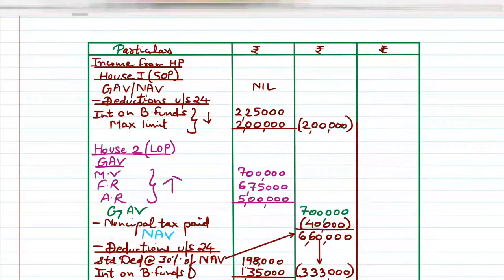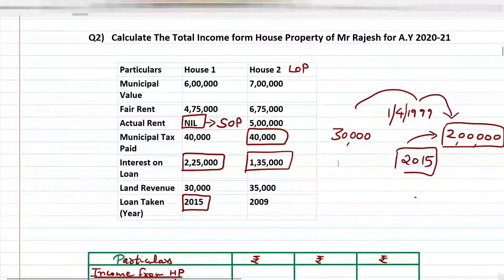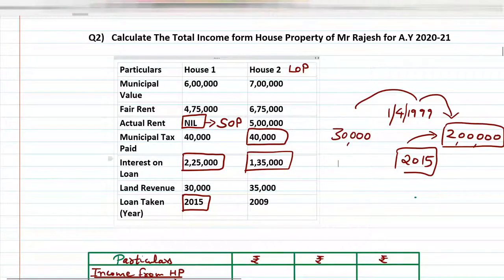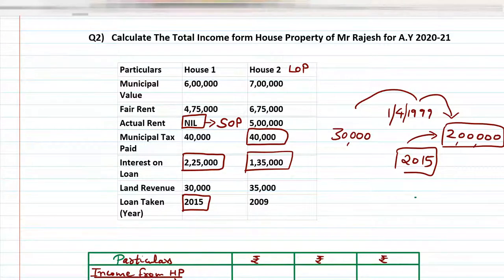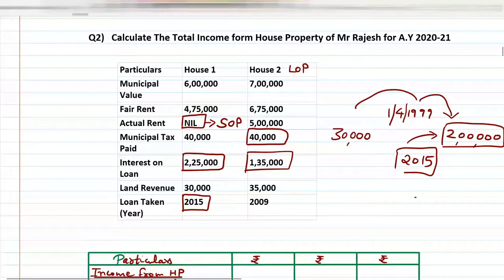In a Self Occupied Property, only one deduction can be claimed — Interest on Borrowed Funds. In the question, interest on loan is ₹2,25,000 and the loan year is 2015. Now check: if loan was taken before 1st April 1999, the maximum limit is ₹30,000. If taken after 1st April 1999, the maximum limit is ₹2,00,000. Since 2015 is after 1999, the limit is ₹2,00,000.